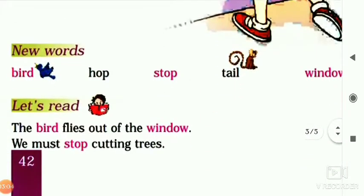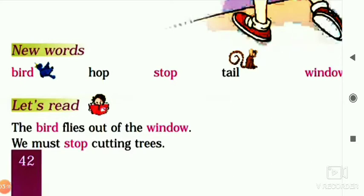Now here are new words from this poem. Bird means chidiya. Hop means phudakna. Stop means rukna. Tail means poonch. Window means khidki.